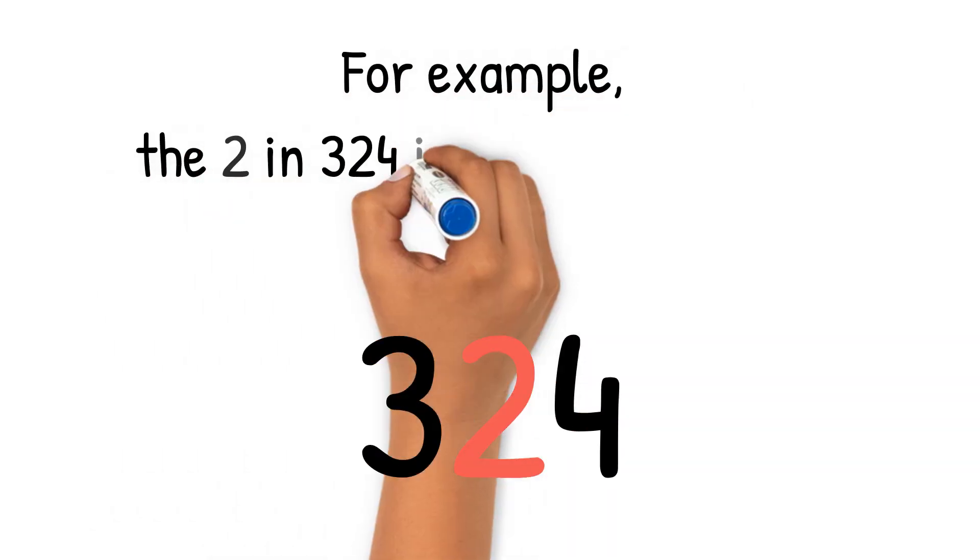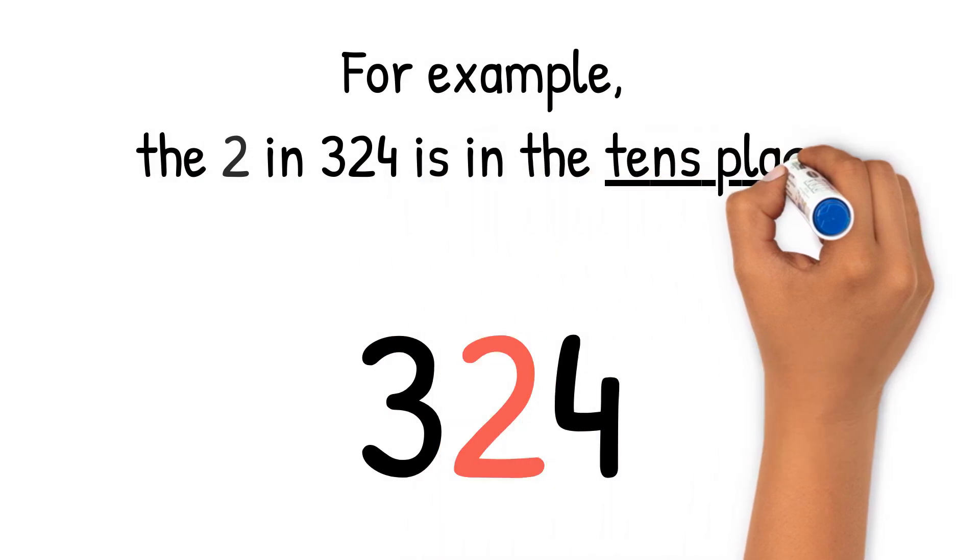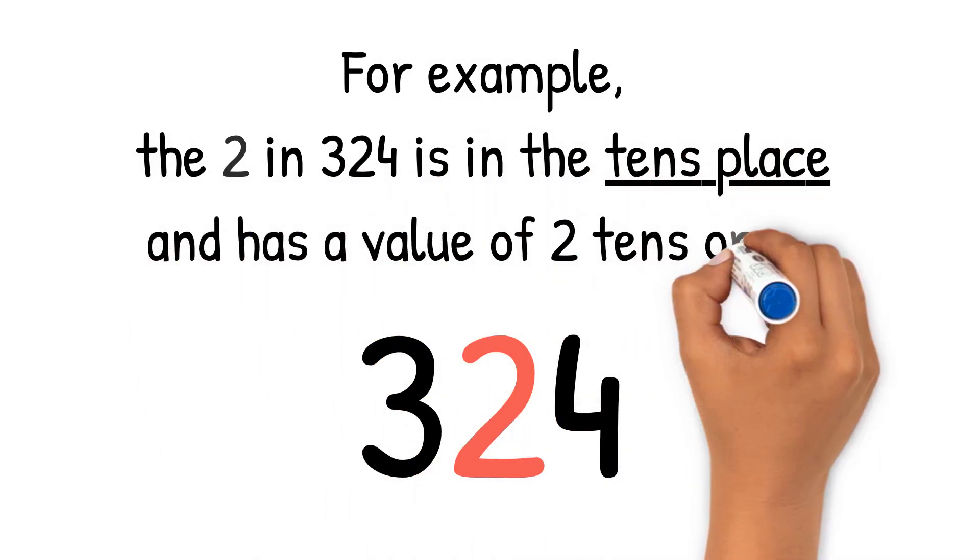For example, the 2 in 324 is in the tens place and has a value of two tens or twenty.